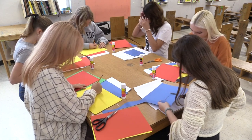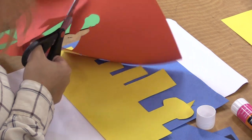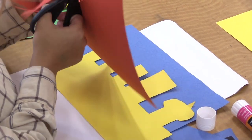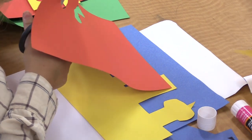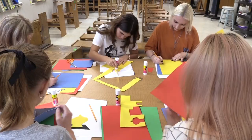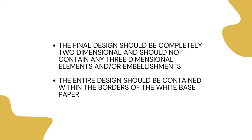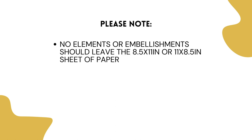Applicants will cut desired shapes out of colored paper, such as construction paper, and arrange and glue them down to a piece of 8.5 by 11 inch thick white paper or cardstock, which will serve as the base for their design. This design should be a creative visual representation inspired by the assigned fable or legend. The final design should be completely two-dimensional and should not contain any three-dimensional elements or embellishments. The entire design should be contained within the borders of the white base paper.